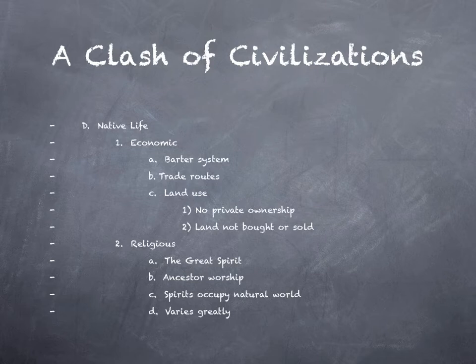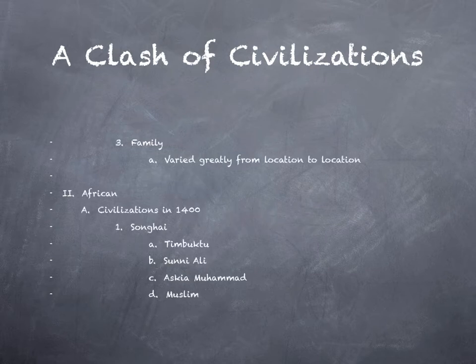The religion of the Native Americans generally involved things like ancestor worship. Most Native American groups had the idea of a great spirit or a single supreme being or force that governed the universe. They believed spirits occupied the natural world, but from civilization to civilization and group to group, religious beliefs could vary greatly. There wasn't really an organized system with a book or a priesthood that kept a uniform system of beliefs throughout Native American cultures.